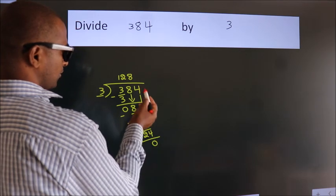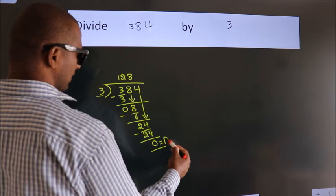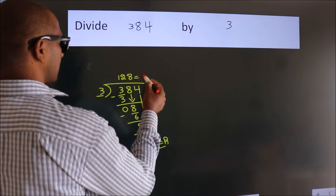After this, no more numbers to bring it down. So, we stop here. This is our remainder. This is our quotient.